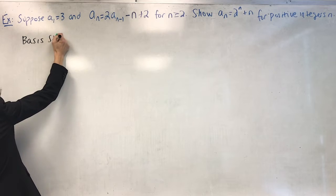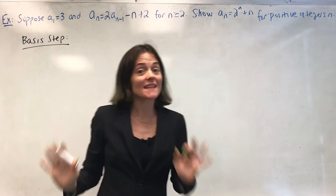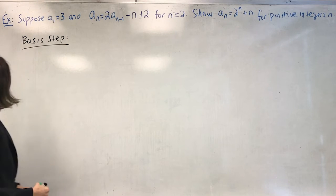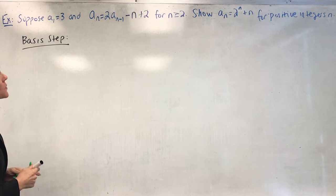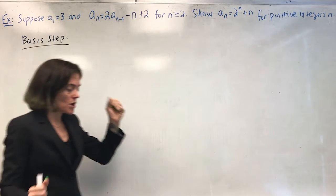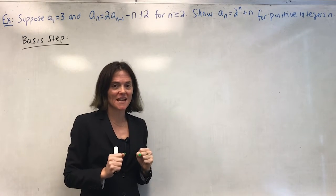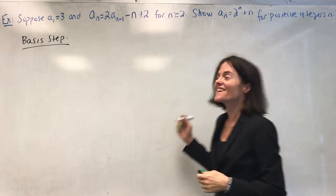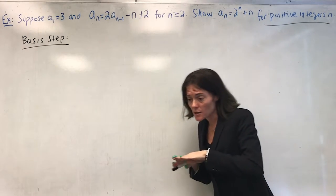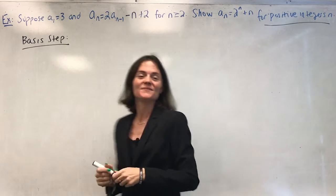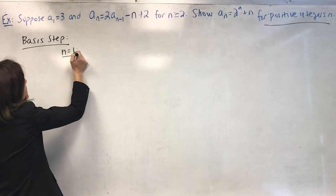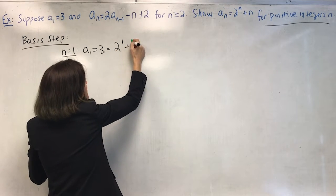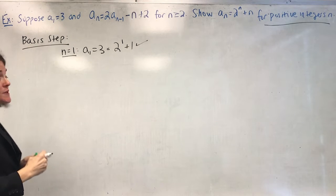Make sure to label basis step and inductive step, or tell your reader you're using induction, so they know what kind of proof you're doing. The basis step: we always start at the bottom. You get on the ladder at one. We're trying to prove this for positive integers, so we must check n equals 1. We have a1 is 3, and this should equal 2^1 plus 1, which is 2 plus 1 equals 3. Very nice.